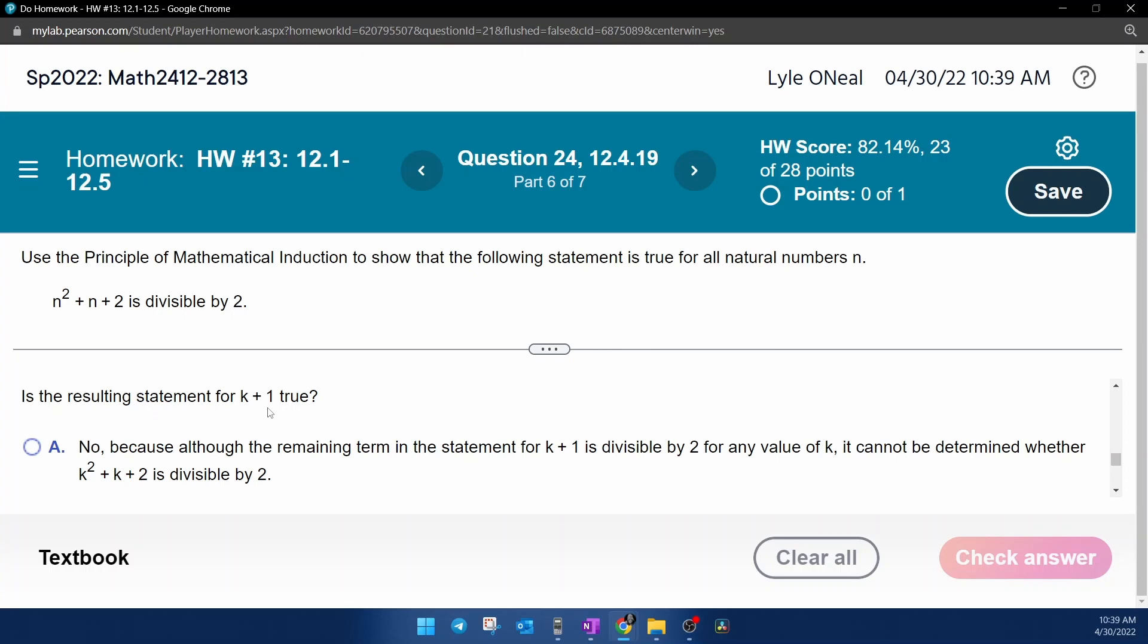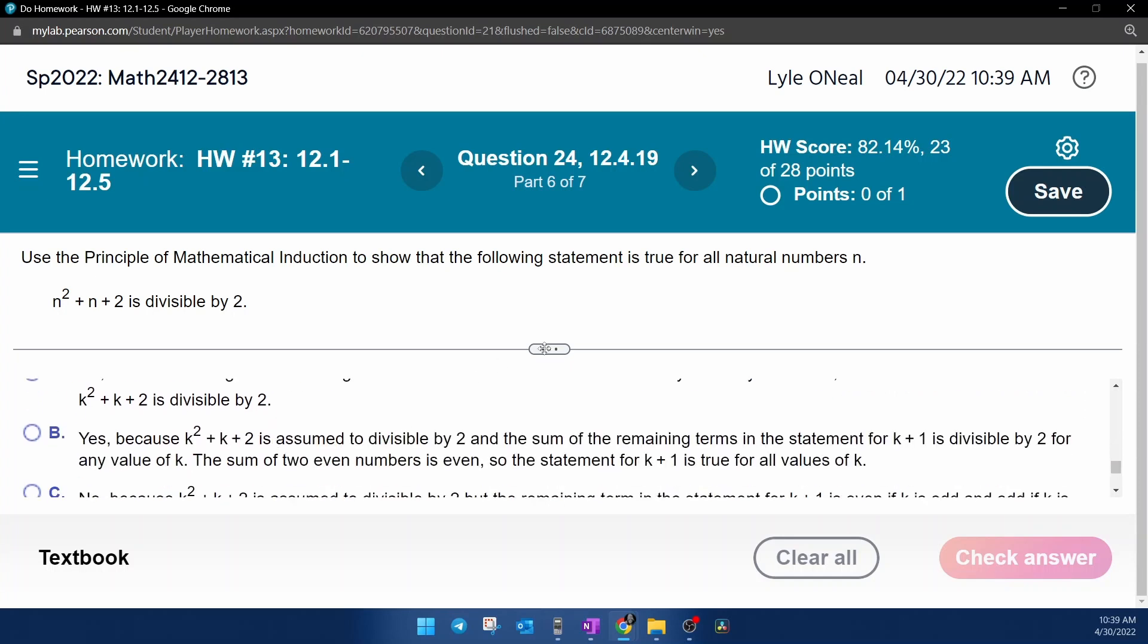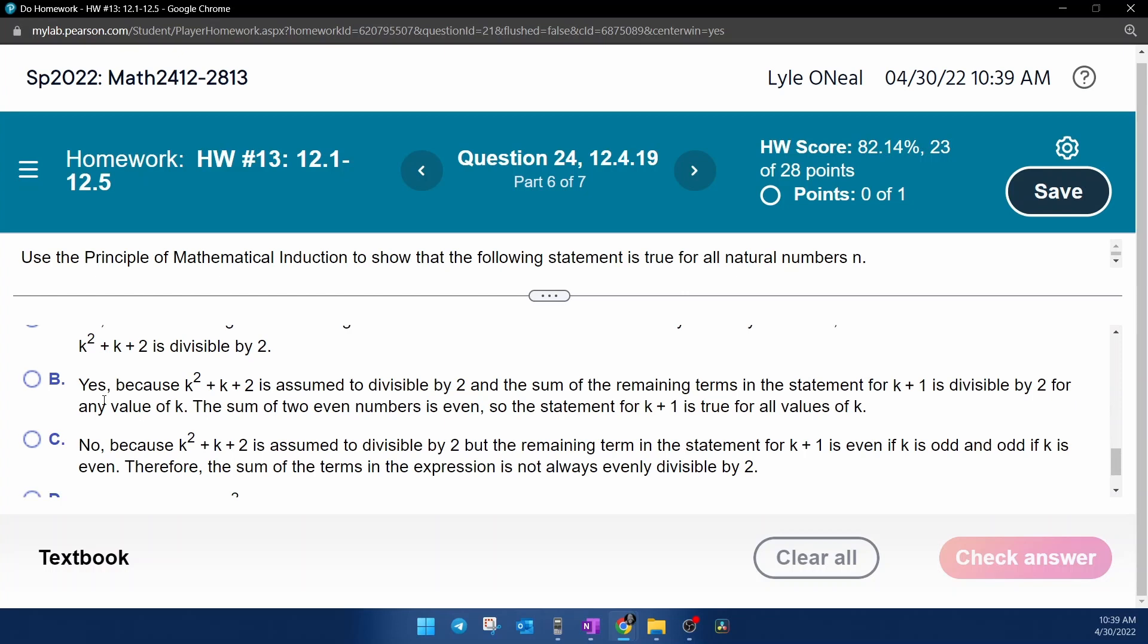And next for part 6, is the resulting statement for k plus 1 true? Well, I think I just showed you that it was. So it can't be no. It could be yes. Let's read their justification. Yes, because this we assume to be true. And the sum of the remaining terms in the statement for k plus 1 is divisible by 2. The sum of two even numbers is even. So the statement for k plus 1 is true for all values of k. I think that's what I just explained to you.